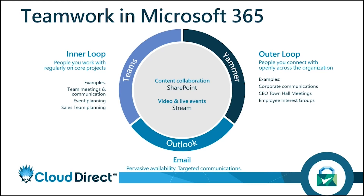The outer loop is people you want to connect with openly across the organization. Things like Yammer, where you can post a message that may be of interest to people, and people can dive into Yammer as and when they see fit — to interact with it or just view it without interacting.